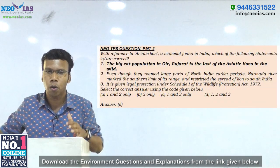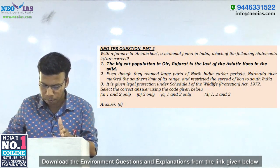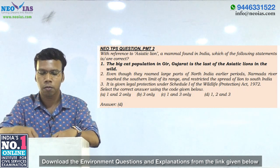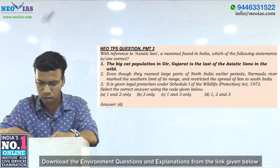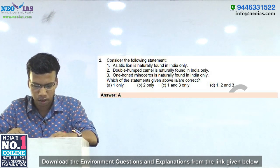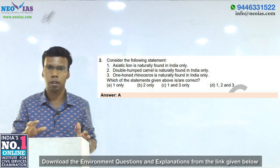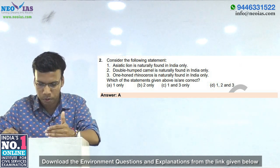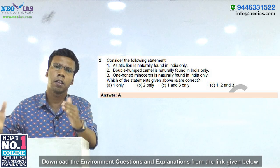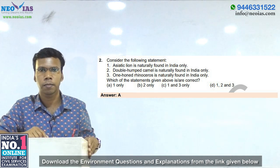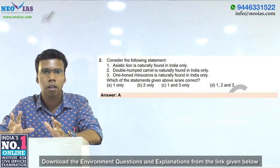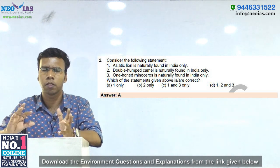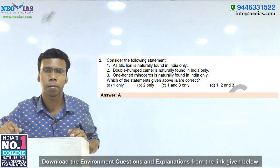In our model test 2 also, we made a question based on the Asiatic lion — stating that the big cat population in Gir, Gujarat is the last of Asiatic lions in the wild. So the first statement of the UPSC question is correct, and we eliminated option B. Now, for the second statement — double-humped camel is naturally found in India only — that was also a current affair. There was news about two types of camels in India: the one-humped camel, seen in hot deserts like the Thar region in Rajasthan, and the double-humped camel, adapted to cold mountain regions, mainly in the Ladakh region.